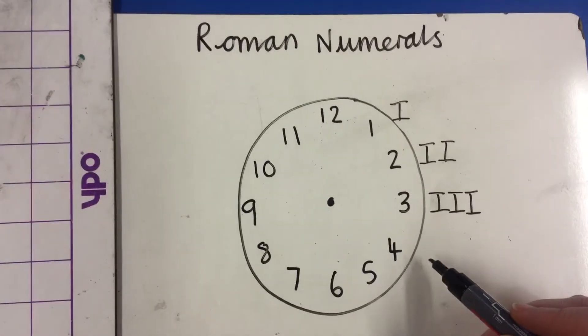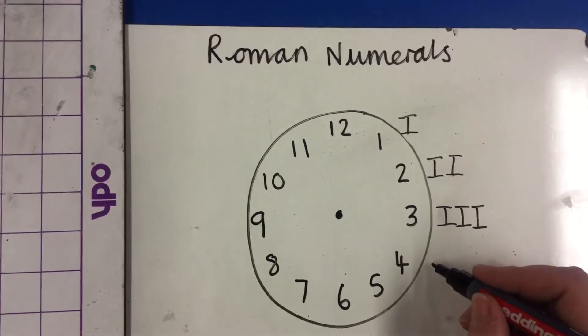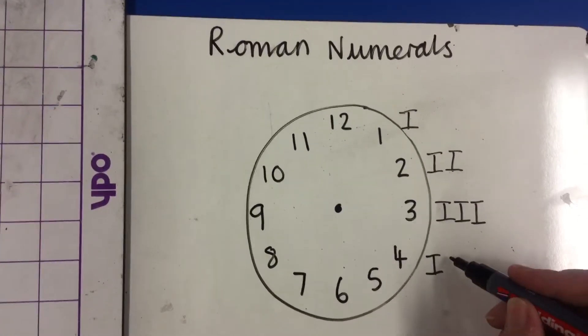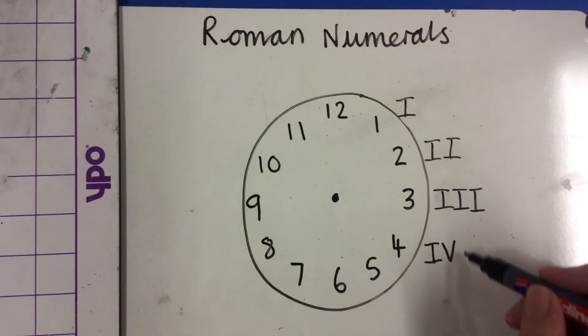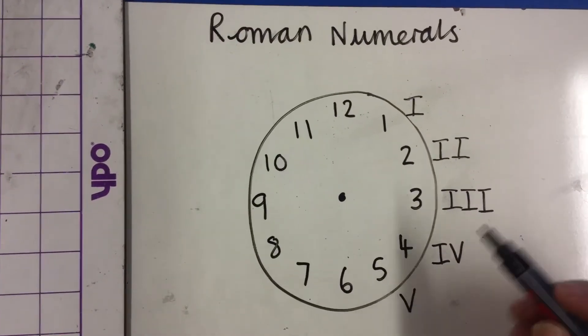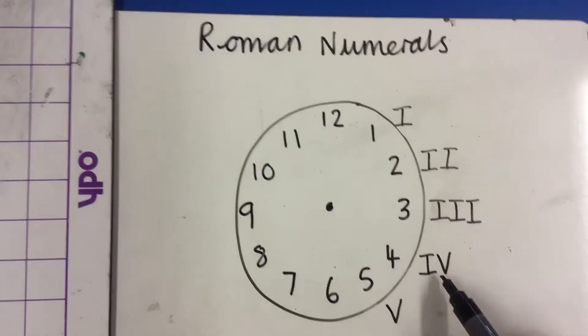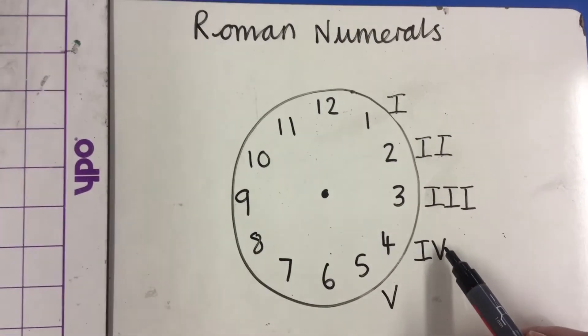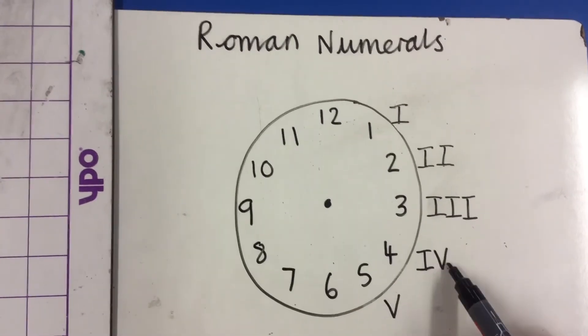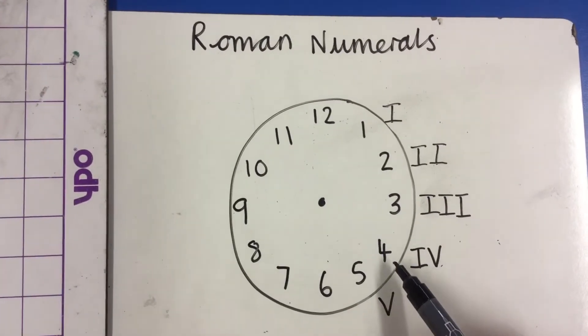The number 4 is slightly different. The number 4 uses an I, but this time it goes in front of the letter V. The letter V stands for 5. When there is a letter in front of another letter, this means that we subtract it from the following letter. So this is almost 5, subtract 1, equals 4.